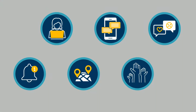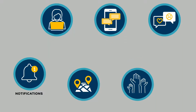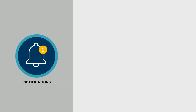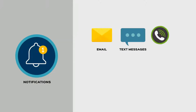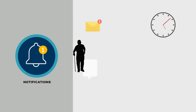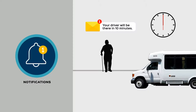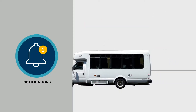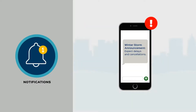Novus DR can be customized with any of these modules. Notifications: customers can customize their email, text message, or phone call notifications to provide up-to-the-minute alerts of next-day trips and imminent vehicle arrivals, reducing no-shows and late cancellations. System-wide announcements can alert customers to emergencies and restricted service. Notifications also has multi-language capability.